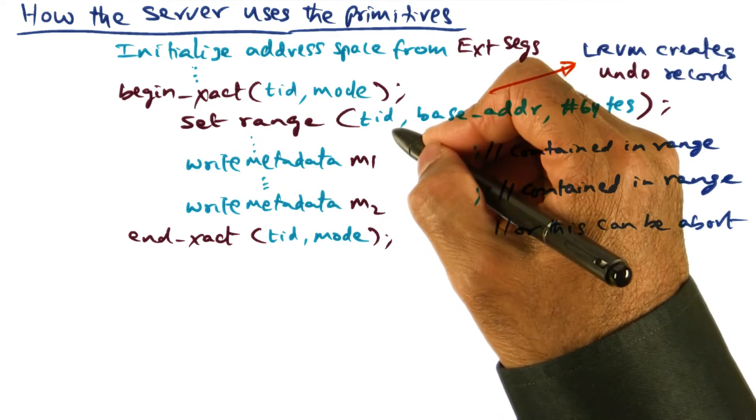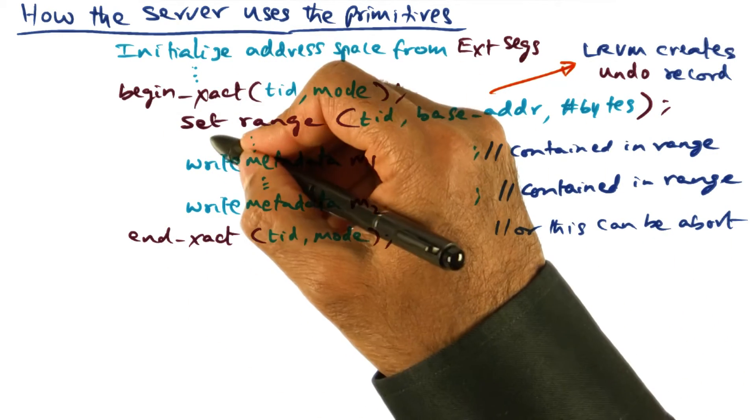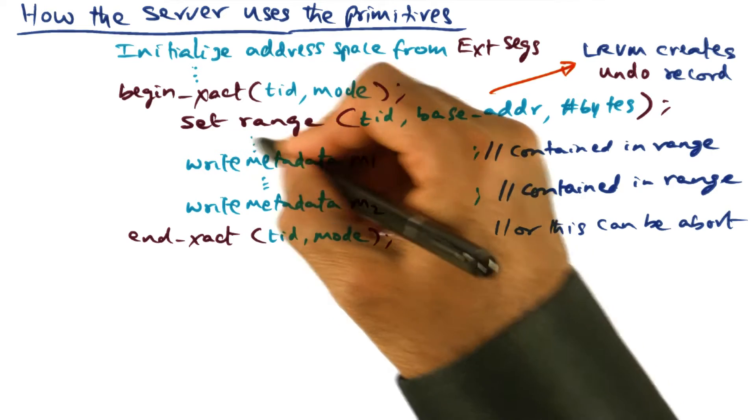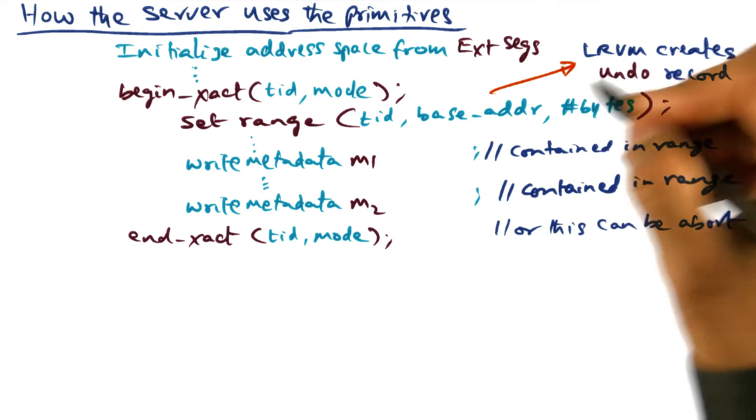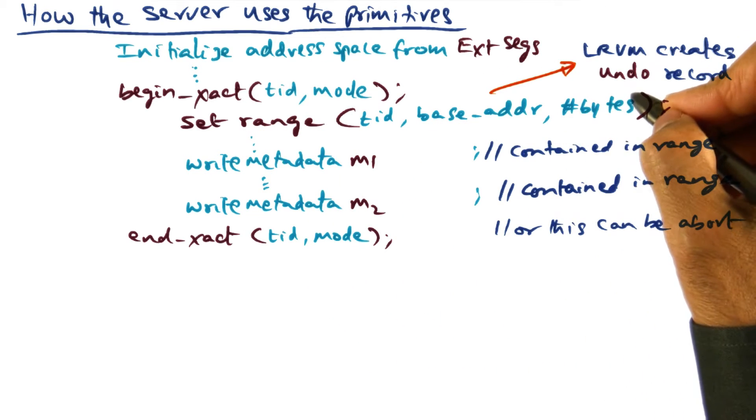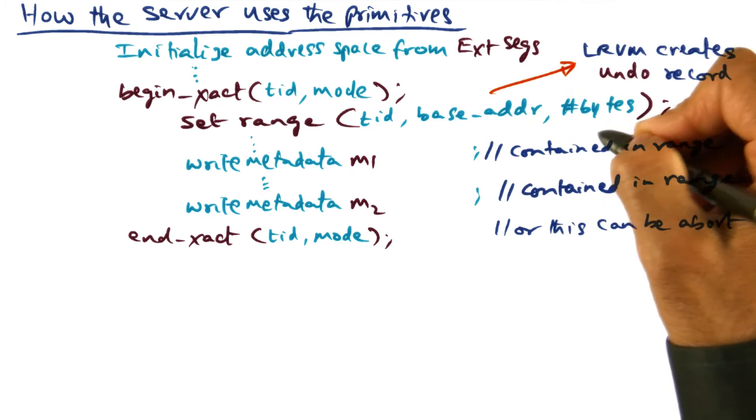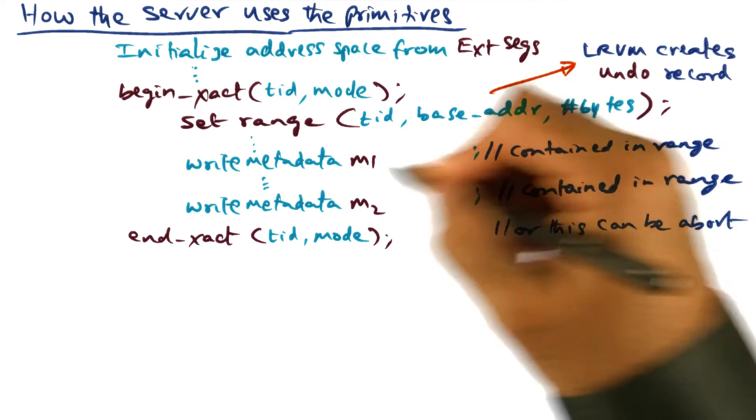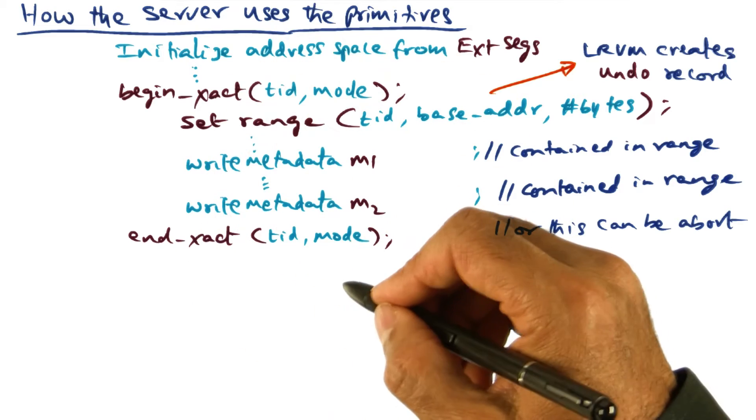So the first thing that LRVM would do inside this transaction code is when you execute the set range call, it says, aha, this is the portion of the address range that the developer is going to modify within this critical section.